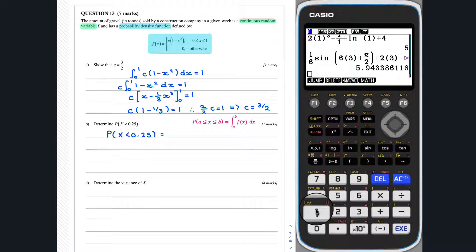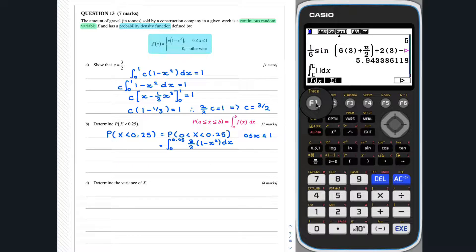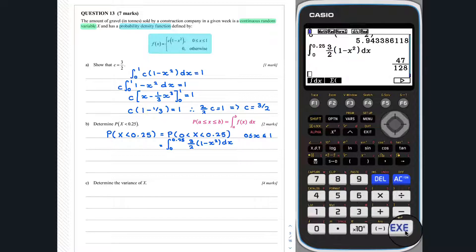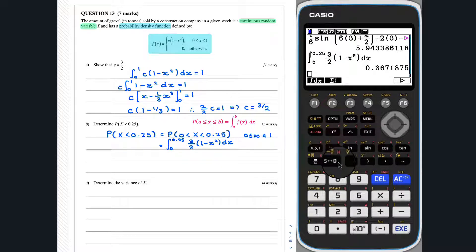Now, we can simplify this probability by using the fact we stated above. This holds as x has to be between 0 and 1, so x can be no smaller than 0. So, the probability that x is smaller than 0.25 is 0.367.